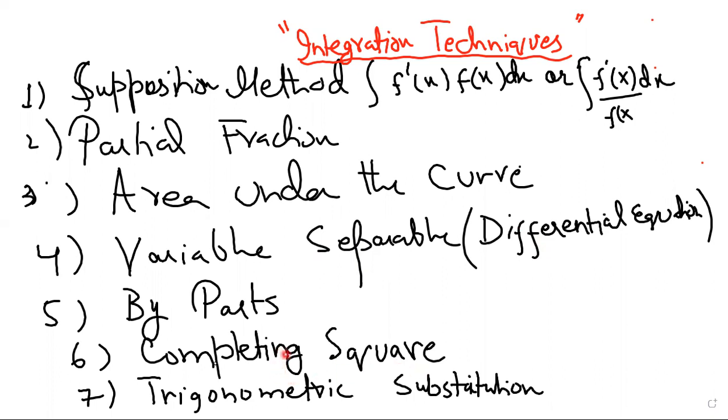The sixth technique is completing square. This technique is used when the denominator has three terms where we can apply the perfect square formula. Sometimes two terms are there, then we need to make the third one to make the perfect square and apply the completing square technique.